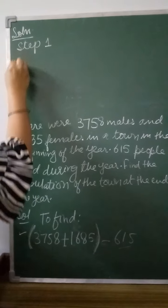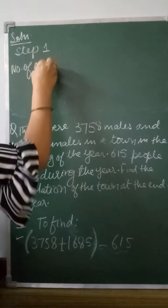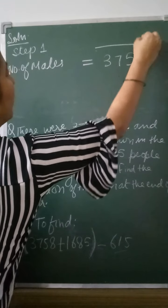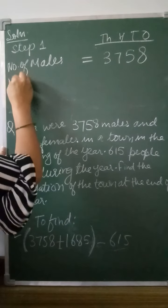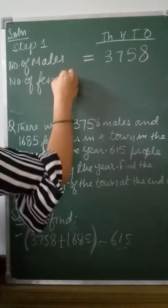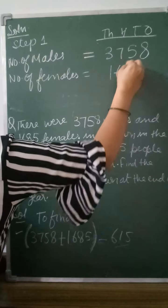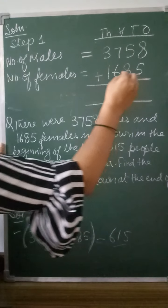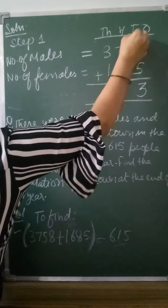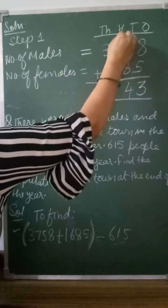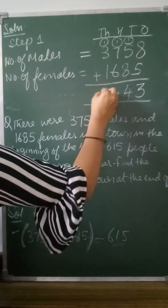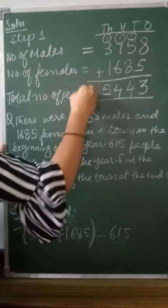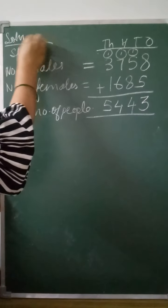Since this is a word problem, we write the statement. Step 1 is addition: number of males = 3,758; number of females = 1,685. Adding these: 8 + 5 = 13, carry 1; 5 + 8 + 1 = 14, carry 1... The total number of people is 5,443.